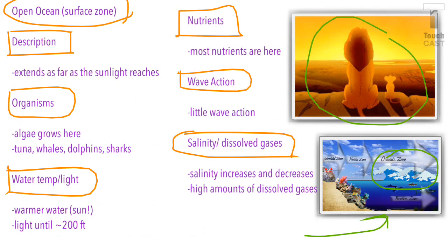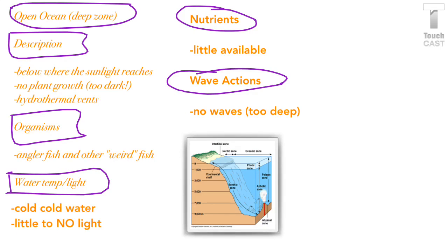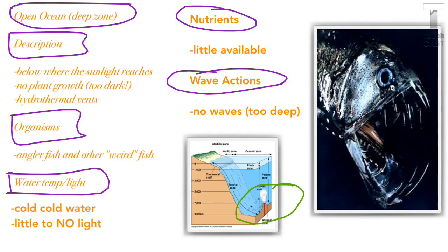Big things like whales and dolphins need the air, and bigger fish need the dissolved gases too. Our last zone is the open ocean deep zone — below where the sun reaches, with no plant growth because it's too dark. There are hydrothermal vents down there. The water is cold with little to no light, very little nutrients available, and because it's really deep, there are no waves.